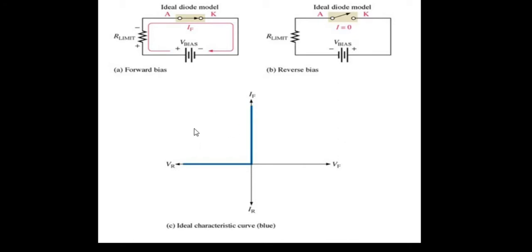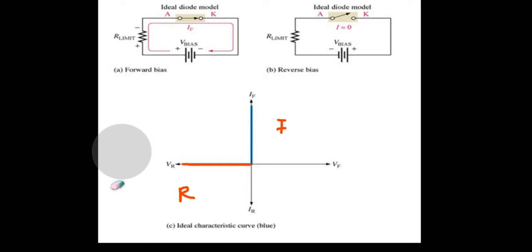From this IV characteristic graph, you see when it is forward biased — this side is forward biased and this is reverse. When it is forward biased, you don't even need to apply any voltage and current will start flowing through it. But when it is reverse biased, no matter the voltage applied, there will be no current flowing through it. In the case of an ideal diode, when it is reverse biased, it doesn't allow the flow of current.